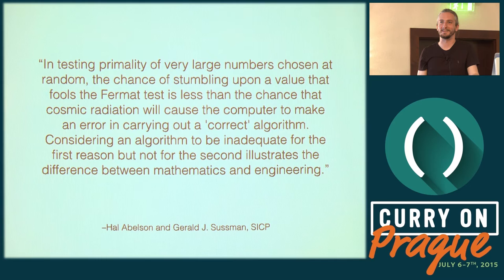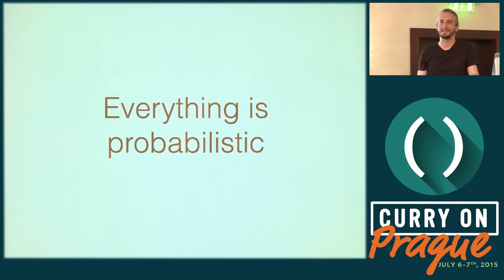I really like this quote from the Structure and Interpretation of Computer Programs: 'In testing primality of very large numbers chosen at random, the chance of stumbling upon a value that fools the Fermat test is less than the chance that cosmic radiation will cause a computer to make an error in carrying out a correct algorithm. Considering an algorithm to be inadequate for the first reason but not for the second illustrates the difference between mathematics and engineering.' It's tongue-in-cheek, but it makes a good point. The world is probabilistic — or at least too complex for us to model 100% correctly.